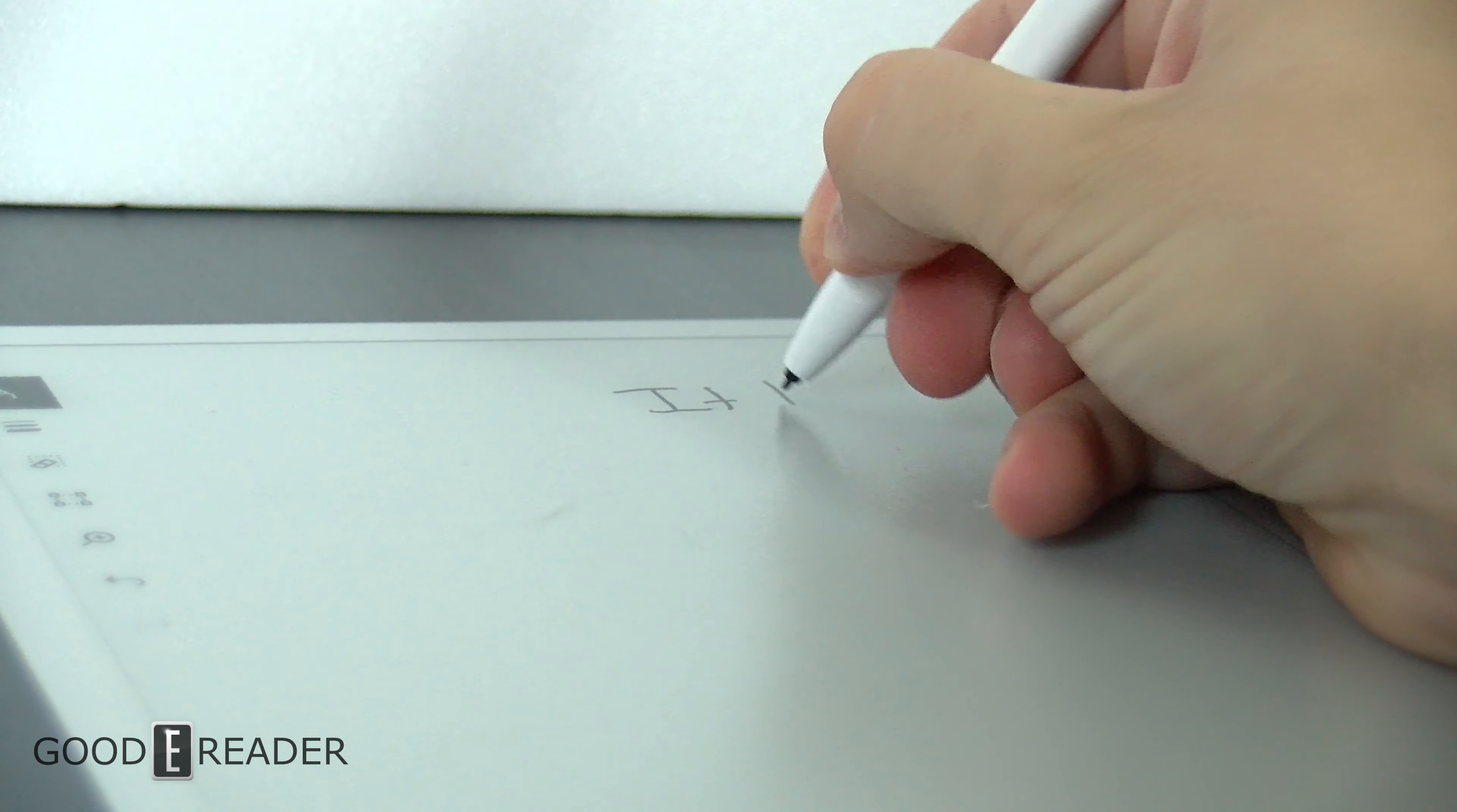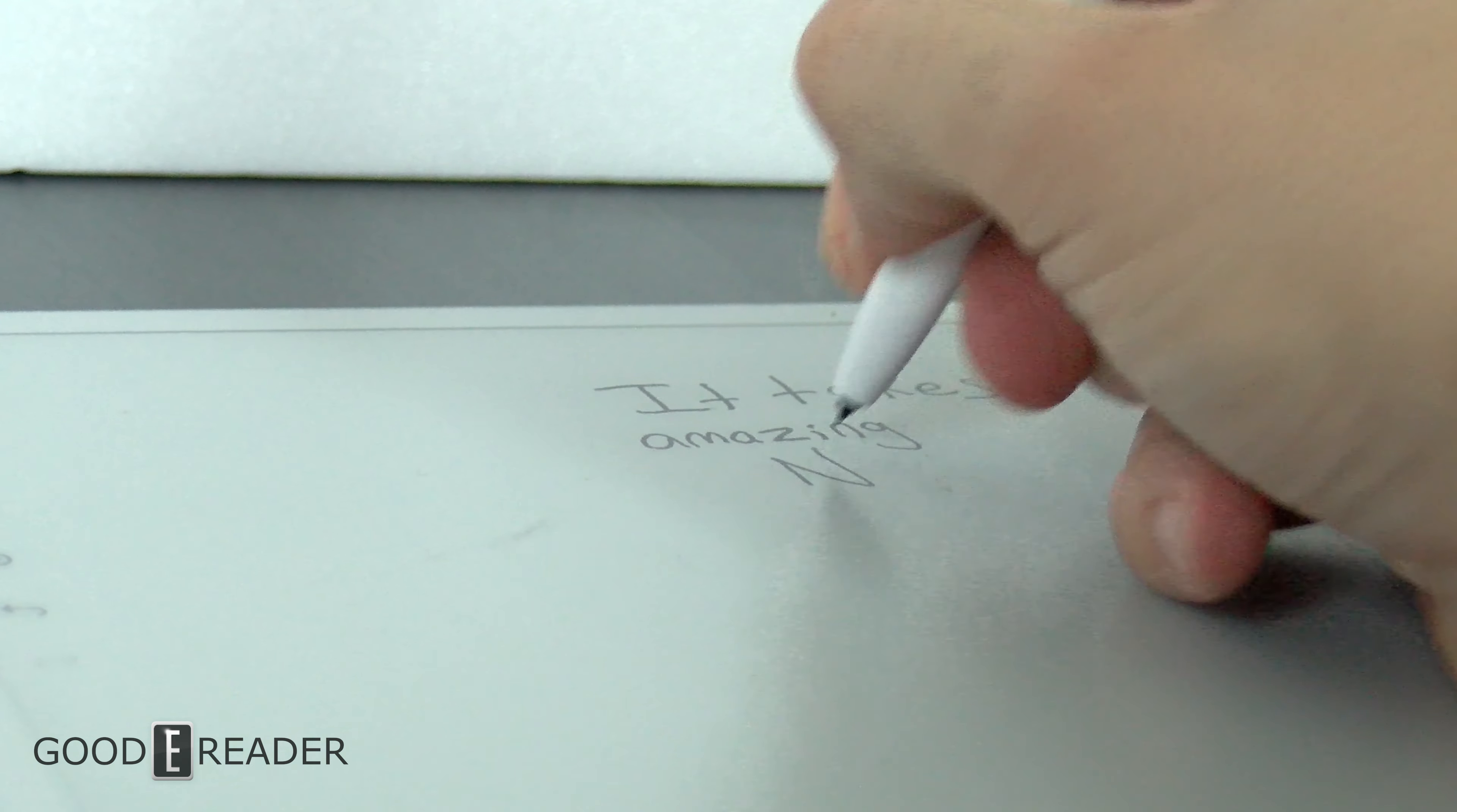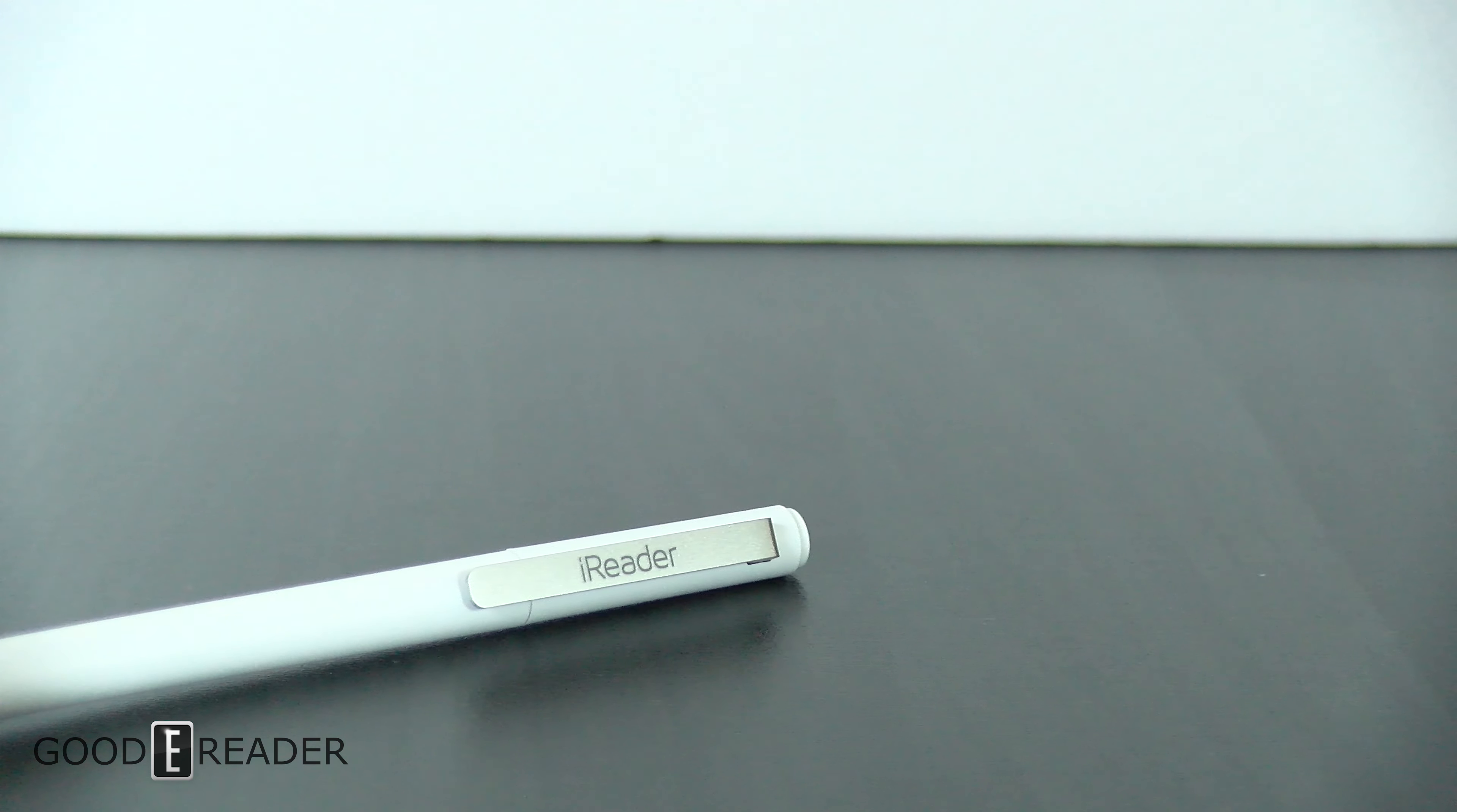The iReader X Pen is one of the best-looking pens in the game. Its cross-compatibility cannot be matched. It's weighted very well. It's made out of high-quality materials, and it's not going to break the bank. It's only $49. You can grab this from the Good e-Reader store at goodyreader.com/blog/shop. And if you want to see more on this and other amazing Wacom-enabled devices, go to youtube.com/goodyreader.